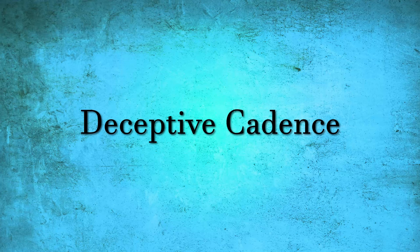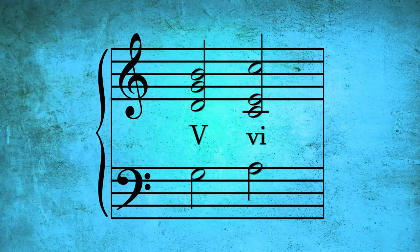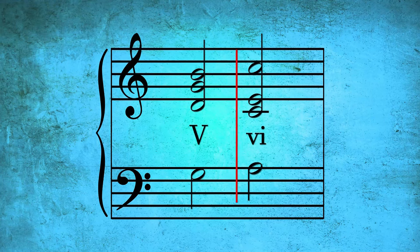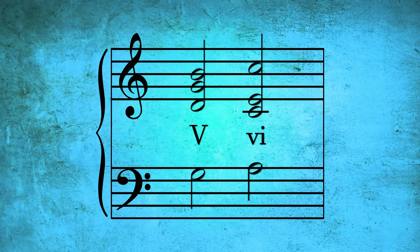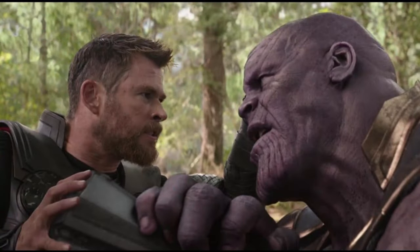Now let's delve into the next cadence known as the deceptive cadence. This cadence creates expectations by using a V chord and then delays the resolution by not proceeding to the tonic. Instead, the composer progresses to the VI chord. Depending on whether the piece is in a major or minor key, the VI chord can be either major or minor. This delay in resolution serves to heighten the drama of the piece. To illustrate, let's consider how a deceptive cadence might be employed in a movie, perhaps in a superhero film. Imagine a scene where the protagonist, the hero, seemingly defeats the antagonist, the villain.